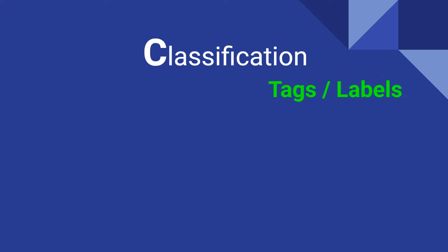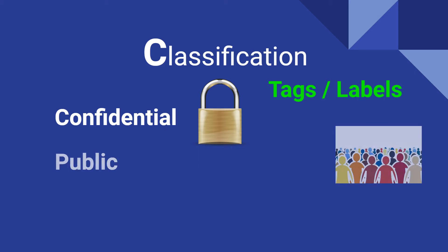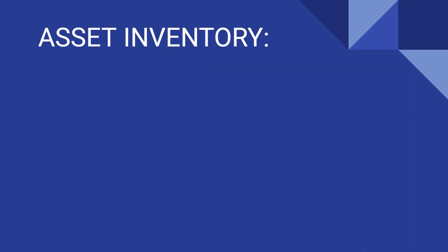Classification is the process of assigning tags or labels to company assets. For example, most of us work with the most basic classifications like confidential, which requires a lot of effort to protect. On the other hand, you have public, which is basically open to public disclosure, like a company's financial statement such as a balance sheet. You might also have proprietary or sensitive information, meaning that only internal folks can access it, and maybe you won't need to apply role-based permissions to it.